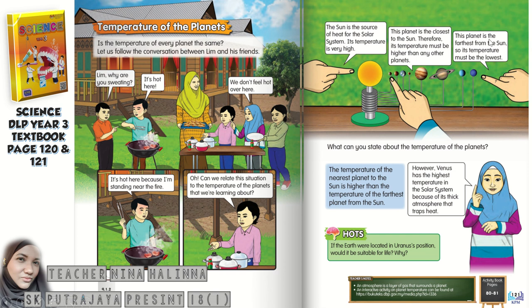This planet here is the farthest from the sun, so its temperature must be the lowest. See the distance. Do you remember what this planet's name is? You're right — it's Neptune.